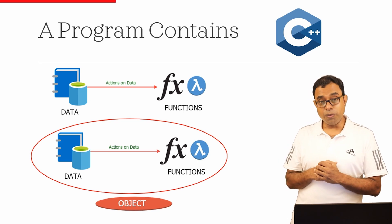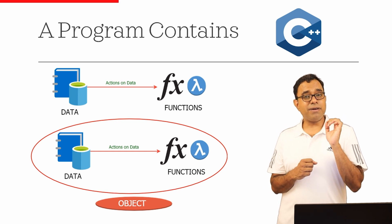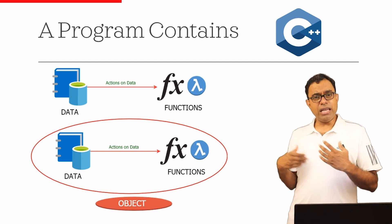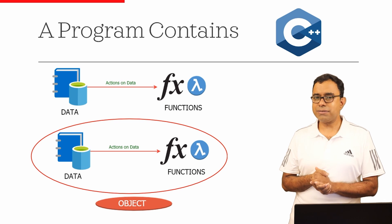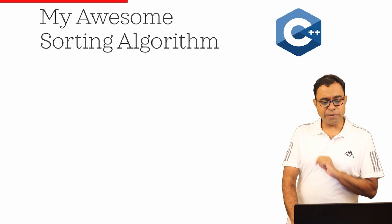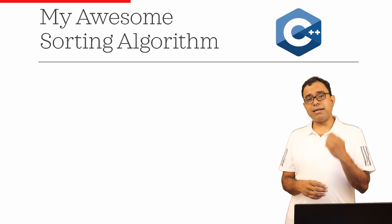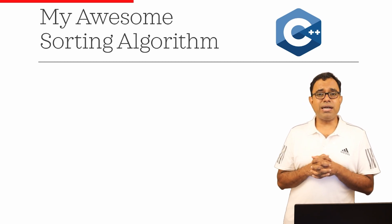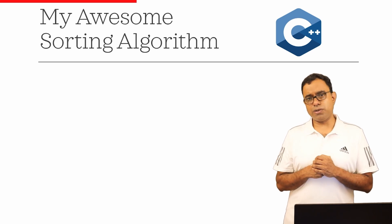If you want to know more about this I highly recommend you see my video on object-oriented programming — I have clearly stated what it is and why it was created. So even with the arrival of object-oriented programming, there were still only two things in a program: data and functions. Now let me talk about a very specific problem. Let's assume that I'm a good programmer and I created a sorting algorithm which is much faster than existing sorting algorithms like quicksort or mergesort — an extremely fast sorting algorithm.